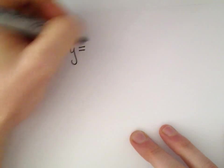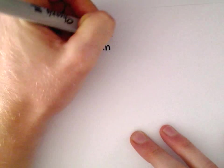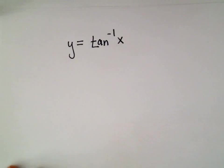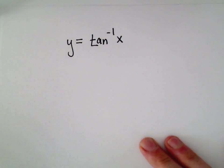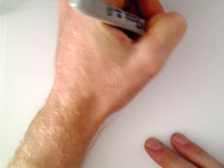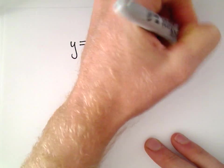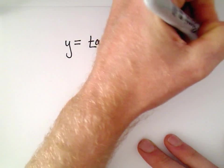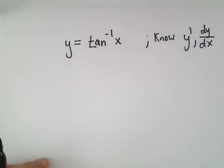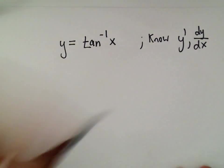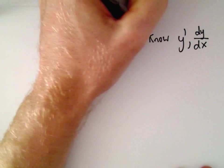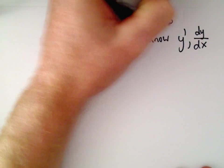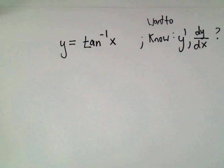So we're going to start with the function y equals inverse tangent of x. Okay, and again, what we want to find is we would like to know, we want to know what y prime, or equivalently, dy over dx. We want to figure out what formula for the derivative. That's what we're trying to find.